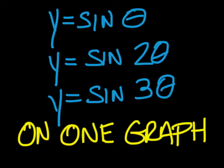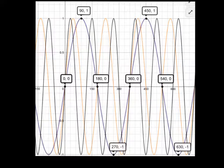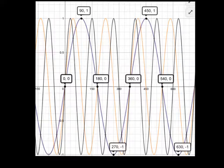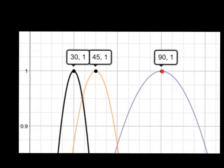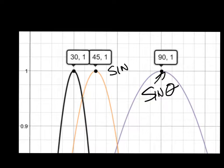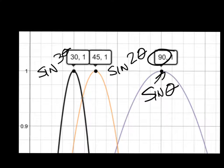Sine theta, sine 2 theta, and sine 3 theta all on one graph — that really looks like a mess. But I've labeled the points of sine theta to show where the original one is. When we went to 2 theta and then to 3 theta, I've zoomed in on that area. So there was sine theta; when we went to sine 2 theta, we've cut that in half. When we went to sine 3 theta, we've cut that into a third. So it compresses it together.